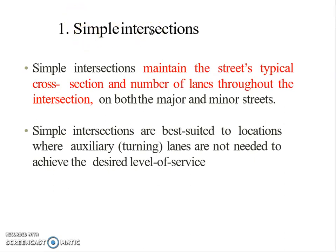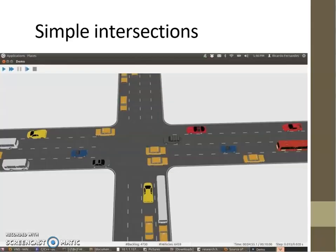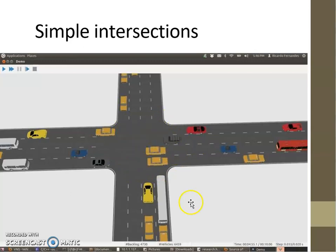The first classification is simple intersections. A simple intersection is a typical cross section with a number of approach roads meeting at the same plane. There is a major road and a minor road, and vehicles pass through. No separate turning lanes are provided in these types of intersections.